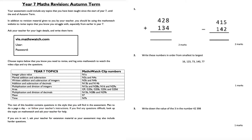Question 1: 8 plus 4 is 12, carry the 1; 2 plus 3 is 5, add the 1 is 6; 4 plus 1 is 5. The next part: 415 take away 142. 5 take away 2 is 3; 1 take away 4 — I need to borrow — that becomes 11; 11 take away 4 is 7; and 3 take away 1 is 2.